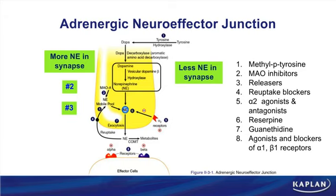The third mechanism to increase norepinephrine in the synapse is blocking reuptake into the presynaptic nerve. Tricyclic antidepressants block reuptake, and so does cocaine. Cocaine and TCAs, by blocking the reuptake of norepinephrine, will increase the amount of NE in the synapse. Amphetamines may also contribute to this mechanism by blocking reuptake, in addition to being major releasers of norepinephrine.